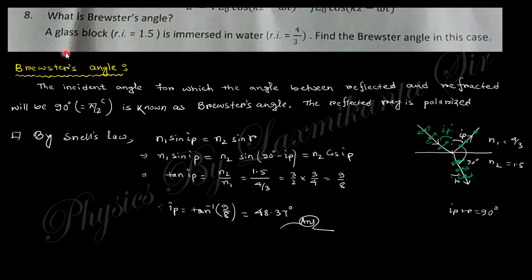What is Brewster angle? For a glass block immersed in water, find the Brewster angle. The incident angle for which the reflected ray and the refracted ray make an angle of 90 degrees, at that moment the reflected part will be linearly polarized. This angle of incidence is known as the Brewster angle. From Snell's law, n₁sin(iₚ) = n₂sin(r). Since this is 90 degrees, iₚ + r = 90. From this we get tan(iₚ) = n₂/n₁. So iₚ = arctan(n₂/n₁).